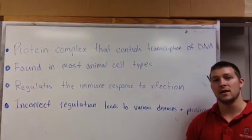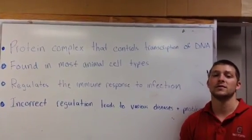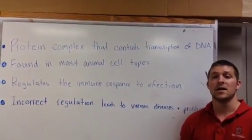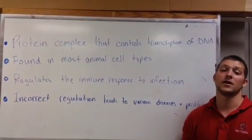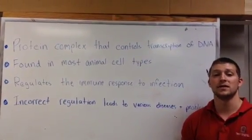NFKB is a protein complex that controls transcription of DNA. It is found in most animal cells and regulates the immune response to infection. Incorrect regulation leads to various diseases and problems.